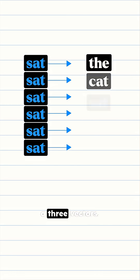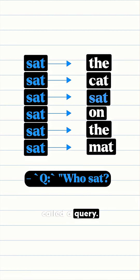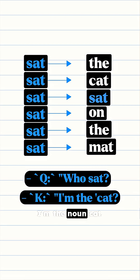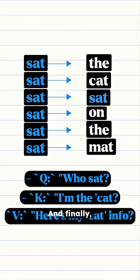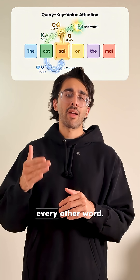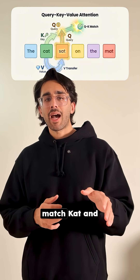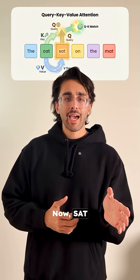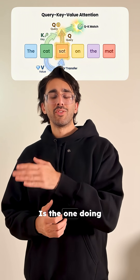For every word, the model creates three vectors. The first is called a Query — this is the word's question: 'I'm a verb, sat. I'm looking for a subject.' Next is Key, or K — each other word's advertisement: 'I'm the noun cat. I'm advertising that I'm a subject.' And finally, V or Value — the word's actual meaning: 'I'm cat. Here is my cat info.' The network smashes the query from 'sat' against the key from every other word, finds the best match — cat — and uses that high score to pull in the value from cat. Now sat knows that cat is the one doing the sitting.